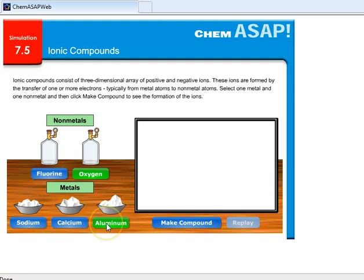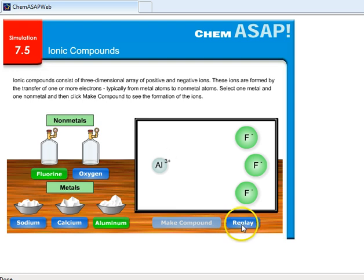Now here we have aluminum. Aluminum has three valence electrons. Let's react that with fluorine. If aluminum is going to give away three electrons, it's going to need three fluorine atoms to receive all three of those electrons. The aluminum will become a plus three charge, and each fluorine will become a negative one charge. So the ratio here is for every one aluminum, there will be three fluorides needed.